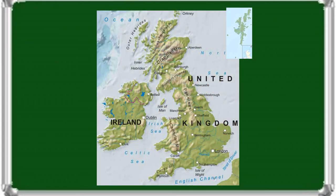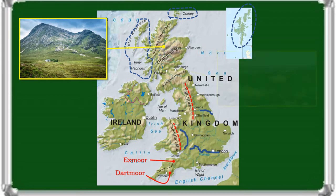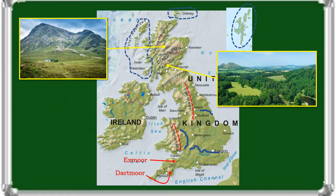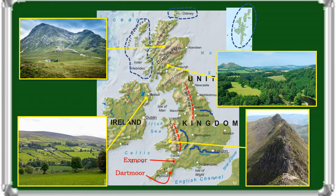Most of England consists of lowland terrain, with mountainous terrain including the Cumbrian Mountains, the Pennines, Exmoor, and Dartmoor. England's main rivers and estuaries are the Thames, Severn, and the Humber. Scotland includes nearly 800 islands, notably the Hebrides, Orkney Islands, and Shetland Islands. Scotland is the most mountainous country in the UK, and its topography is distinguished by the highlands to the north and the west, and the lowlands to the south and east. Wales is mostly mountainous. Northern Ireland, separated from Great Britain by the Irish Sea and the North Channel, is mostly hilly.